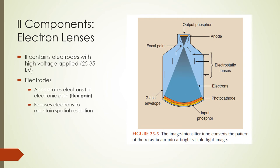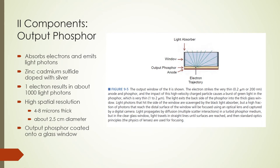Once electrons are released by the photocathode, they enter the vacuum chamber where they are accelerated by high potential differences of between 25 to 35 kilovolts applied across different electrodes. Electrodes shape and control the electron beam, forming what is called an electronic lens. Because of the increased electron speed due to acceleration, there is a so-called electronic gain or flux gain. The output phosphor diameter is about 1 inch compared to the input phosphor diameter of between 6 to 16 inches. The output phosphor absorbs the high energy electrons and emits visible light; it is made of zinc cadmium sulfide doped with silver, releasing about 1,000 light photons per absorbed electron. The output phosphor contains 1 to 2 micron size particles in a 4 to 8 micron thick layer and is coated onto a glass window.